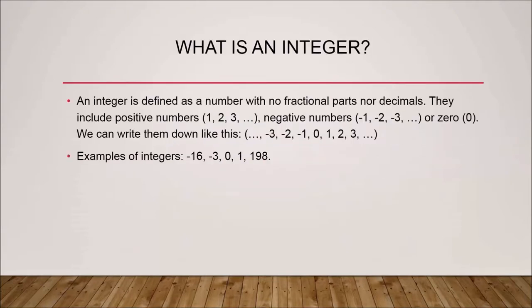Before we go further, we need to know what an integer is. An integer can be defined as a number with no fractional parts and no decimals. Basically, an integer is a whole number — it doesn't have decimals, meaning 3.0111 is not an integer, and three-fourths is a fraction, not an integer.